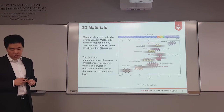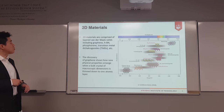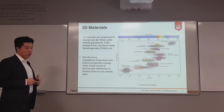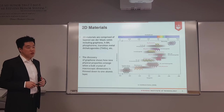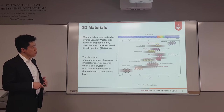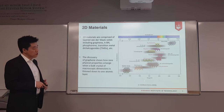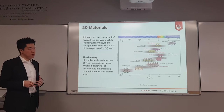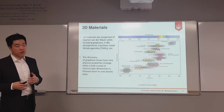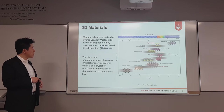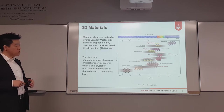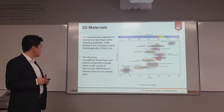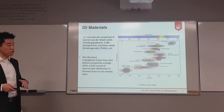2D materials are comprised of one layer of atoms, including graphene, phosphorene, hBN, and transition metal dichalcogenides. These 2D materials give us different energy gaps and band gaps, and can be excited by different wavelengths of laser, providing broad opportunities for device applications. The discovery of graphene revealed new physical properties such as thermal conductivity, electrical conductivity, and mechanical strength compared to bulk crystals when reduced to monolayers.